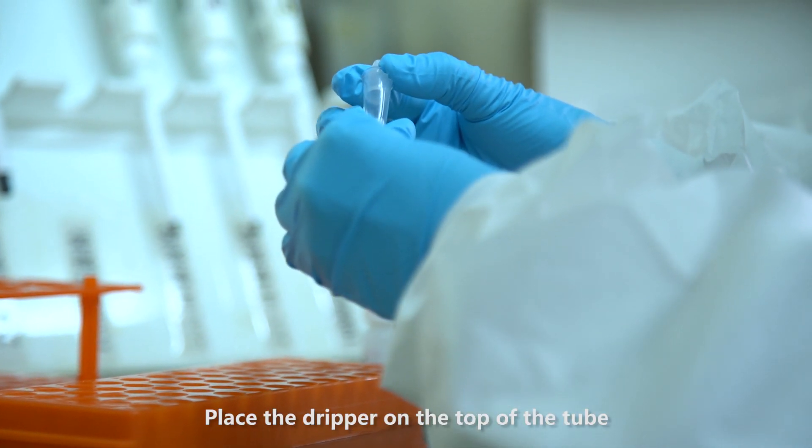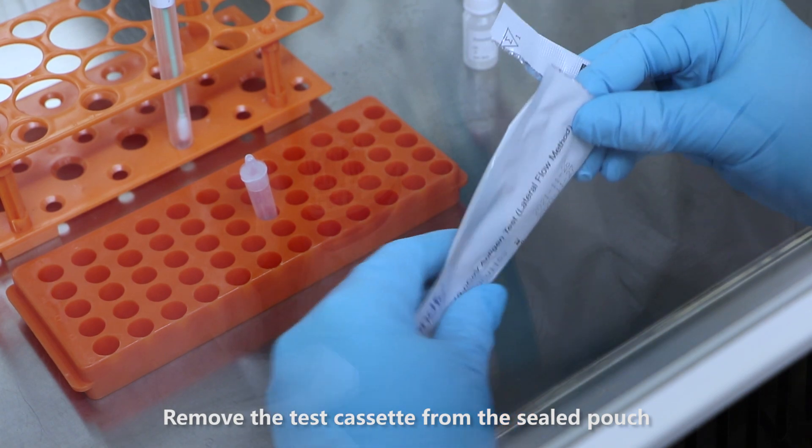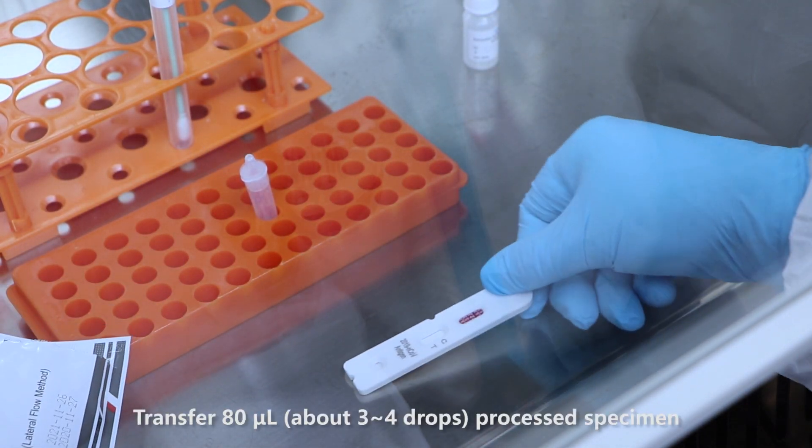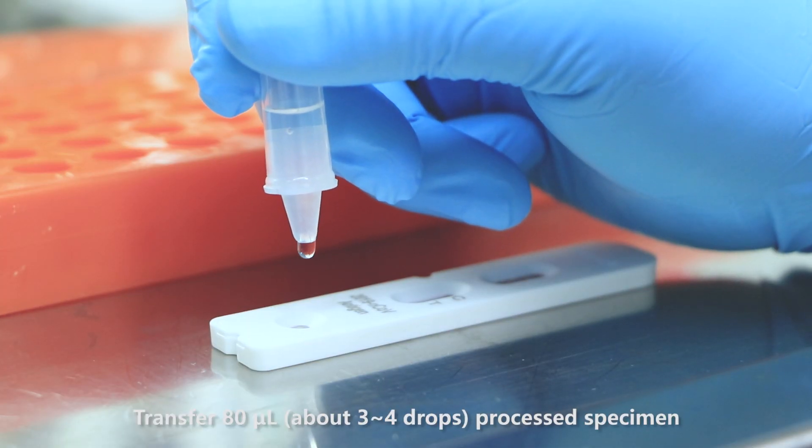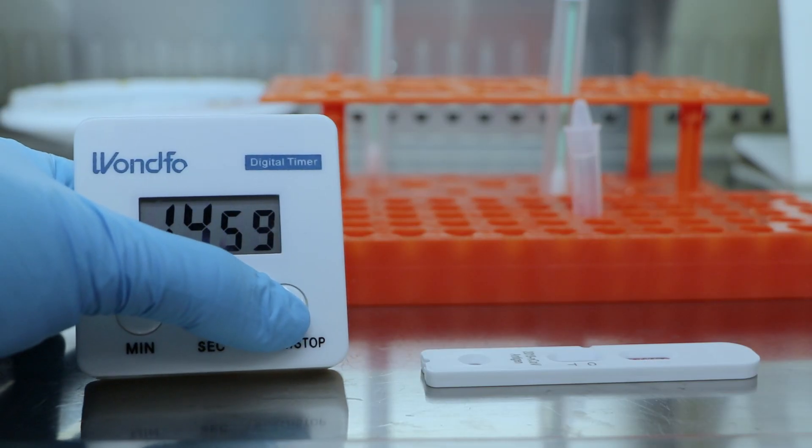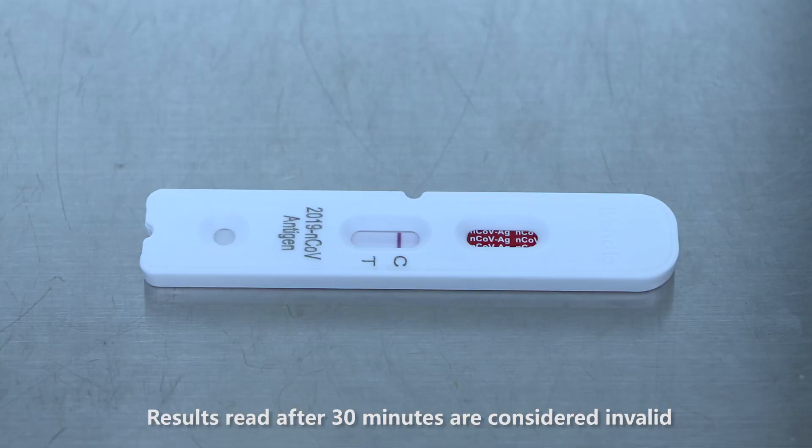Place the dripper on the top of the tube. Remove the test cassette from the sealed pouch and place it on a level surface. Transfer 80 microliters, about 3 to 4 drops, of processed specimen to the sample well and start the timer. Read the result at 15 to 20 minutes. Results read after 30 minutes are considered invalid.